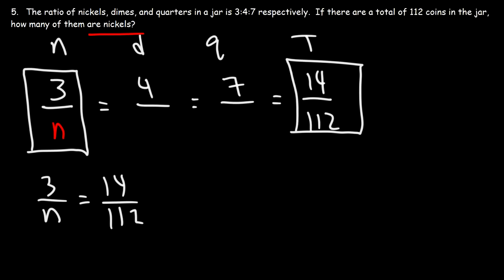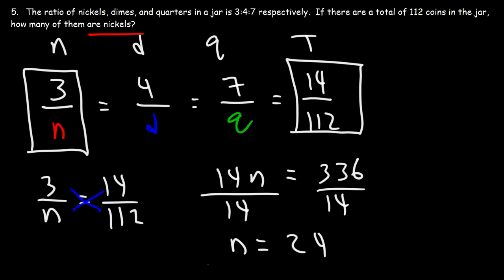So I can calculate the number of dimes, nickels, or quarters, whichever I want in this problem. But let's focus on n. So let's cross multiply. This is going to be 14 times n, and that's going to equal 3 times 112. 3 times 112 is 336. Now, let's divide both sides by 14. 336 divided by 14 is 24. So there's 24 nickels in this jar. And so that's it for this problem.